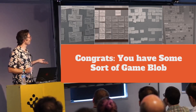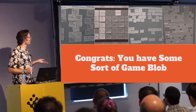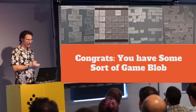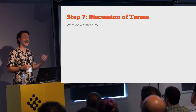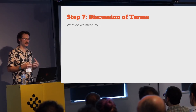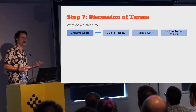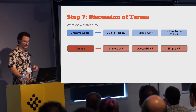At this point you have an amorphous game blob on a wall. Now you get to the hard and interesting stuff: you have to figure out what every card actually means and agree on it as a full team. You literally have to discuss every single card and come to an agreement as to what it means in a concrete and actionable way — what you would actually build because of that thing — and come up with a working definition the team agrees to.